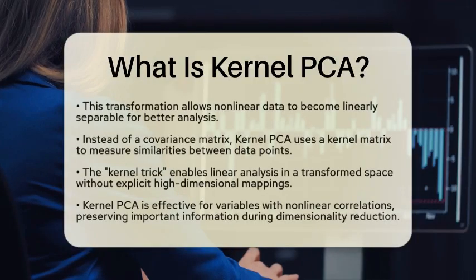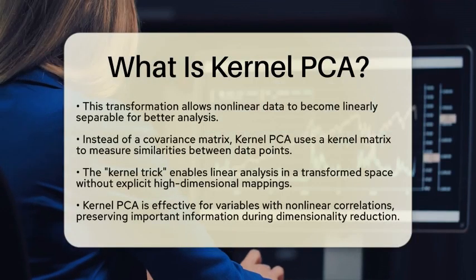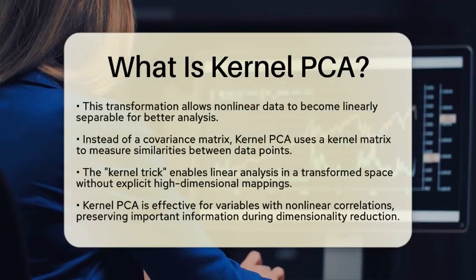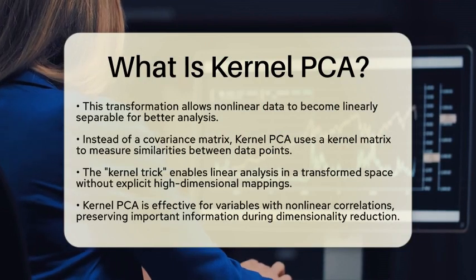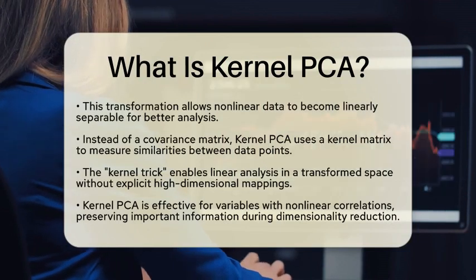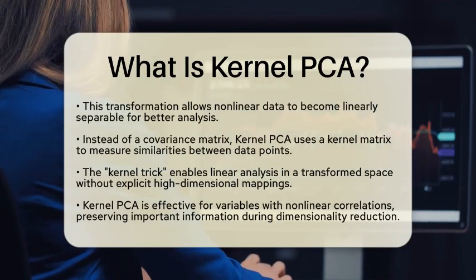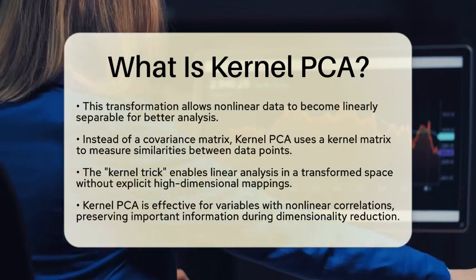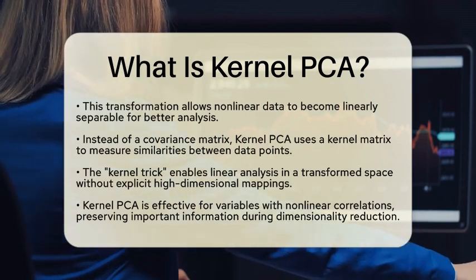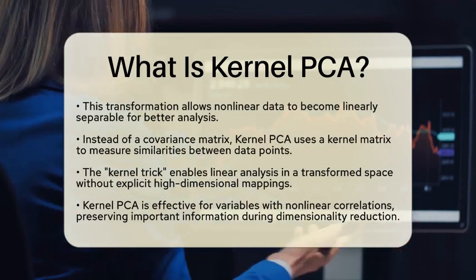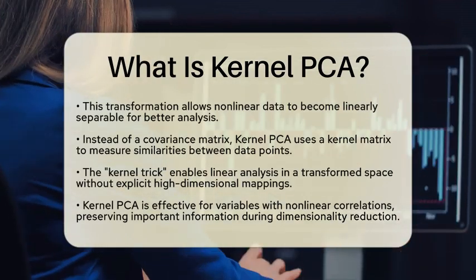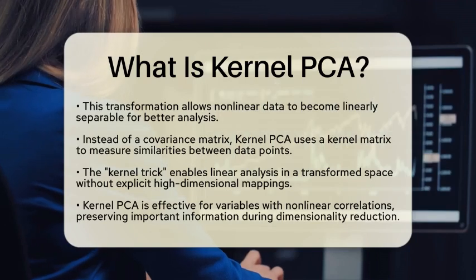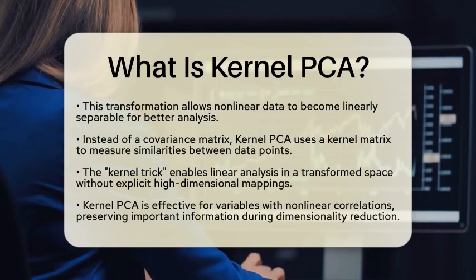Instead of calculating the covariance matrix directly, Kernel PCA uses a kernel matrix that measures similarities between data points. This clever approach is known as the kernel trick, allowing us to perform linear analysis in a transformed space without needing to compute high-dimensional mappings explicitly.